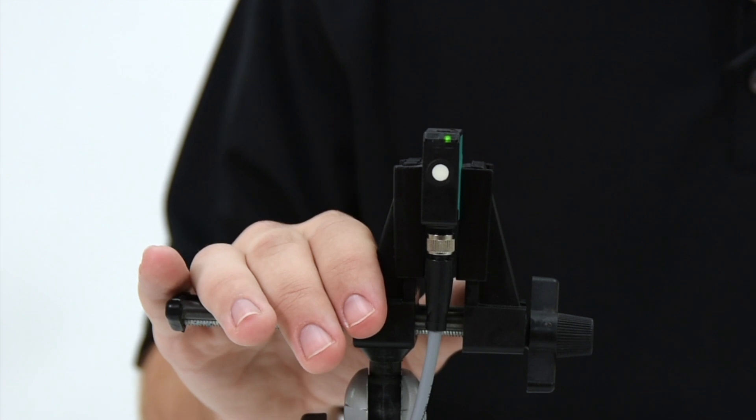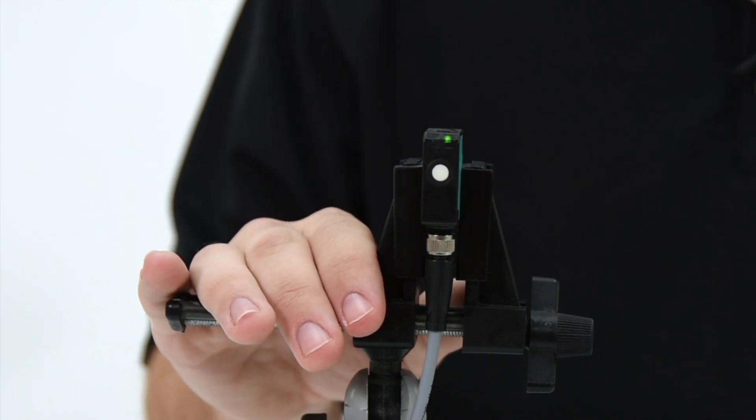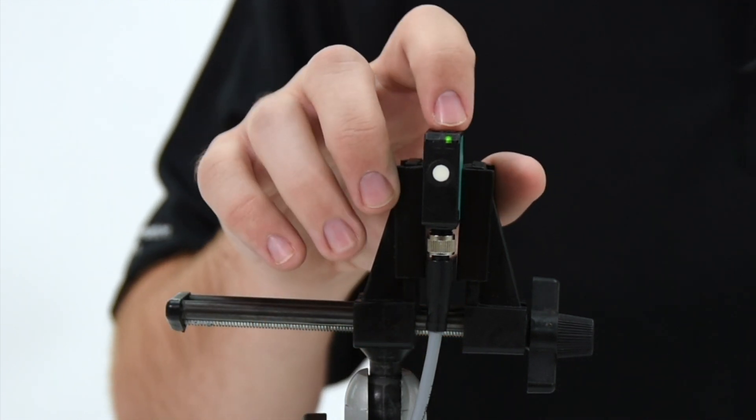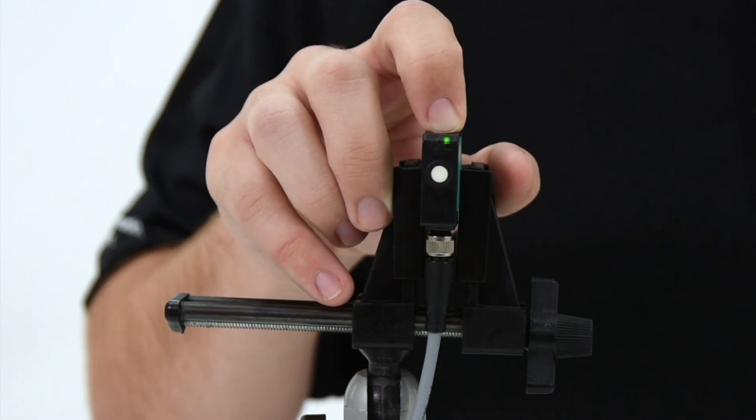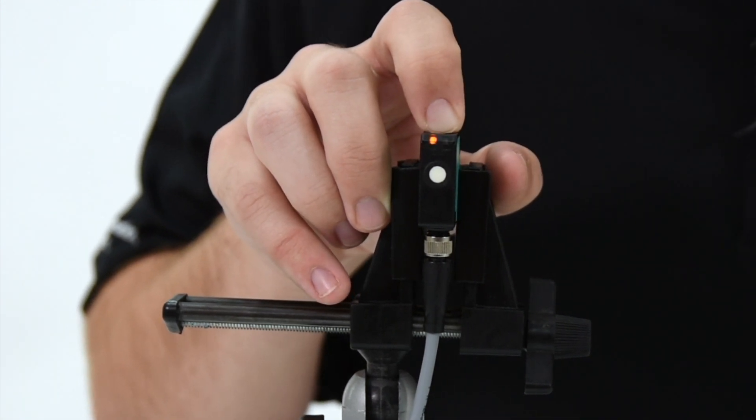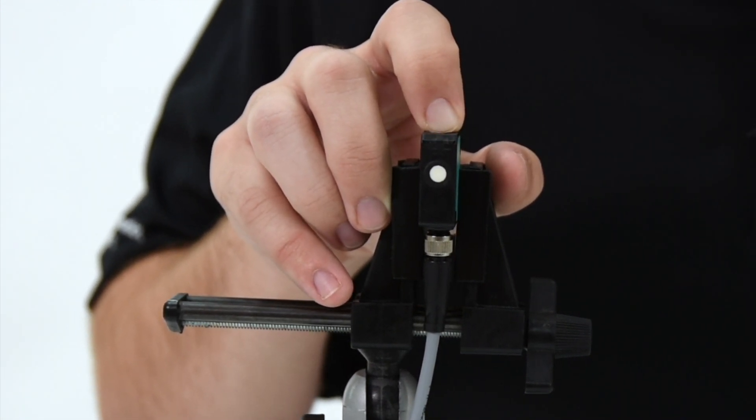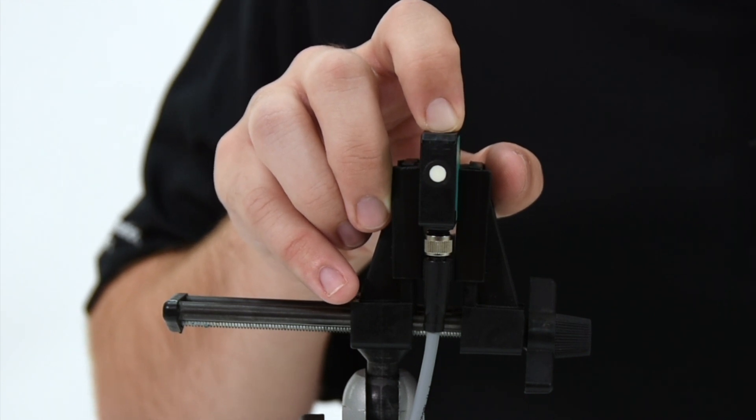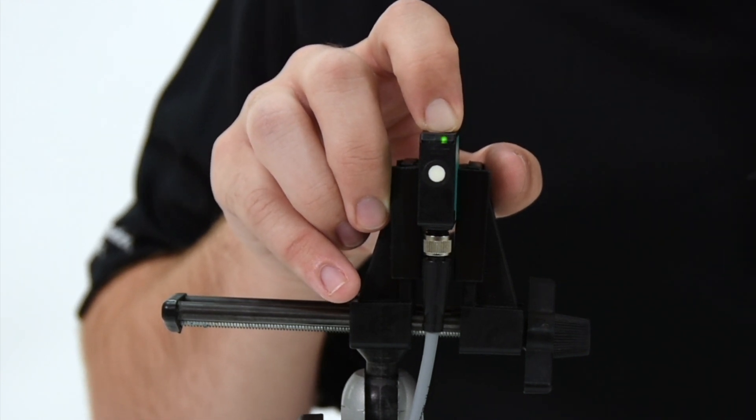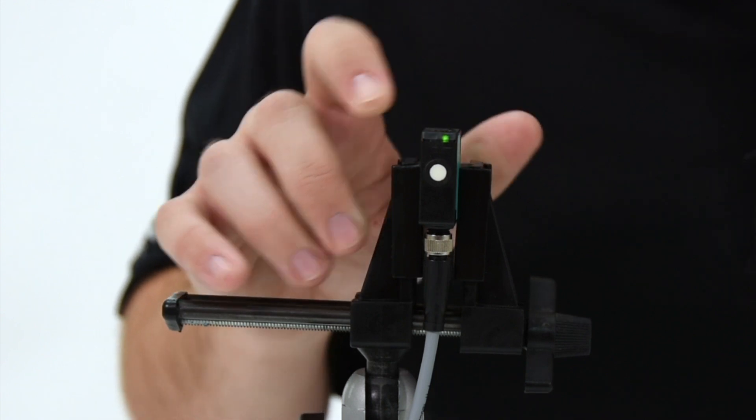Before we begin, it is good practice to factory reset the sensor. To do this, we will hold the button on top for approximately 10 seconds. While it is resetting, it will flash orange, then flash green, and then once it is solid green, it has been restored to factory defaults.